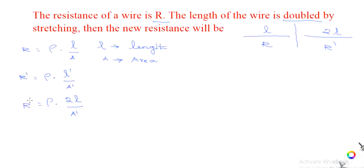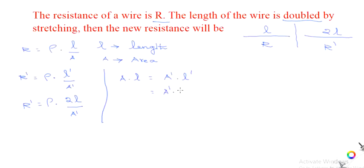Now, the volume of the wire will not change. Volume equals A into L, that is area of cross section into length. The new volume will be A dash into L dash. Since volume does not change, A·L equals A dash·2L. Cancelling L from both sides, A dash is equal to A by 2.